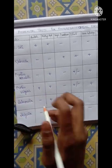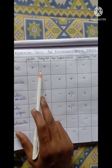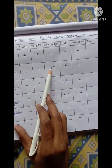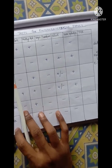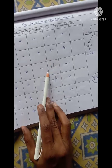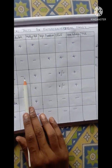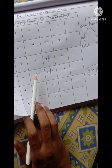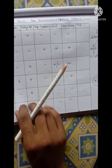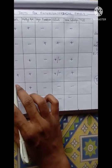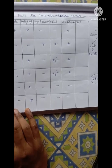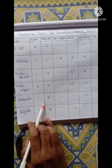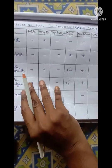Let's repeat again. For E. coli, it is: Indole plus, MR plus, VP minus, Citrate minus, Urease minus. For Klebsiella: minus, minus, plus, plus, plus. For Proteus Mirabilis and Proteus Vulgaris, Citrate is variable, and the difference is only in Indole — the rest are all the same. For Salmonella and Shigella, only Methyl Red is positive and all the rest are negative. If you can remember this table in the IMVICU order, it will be very easy.